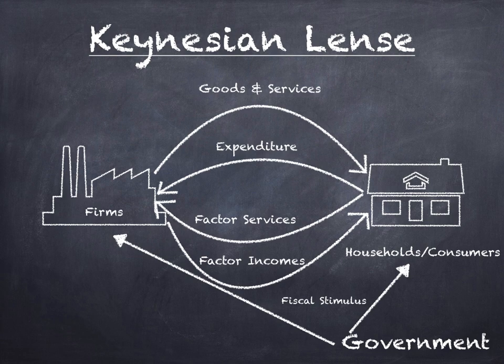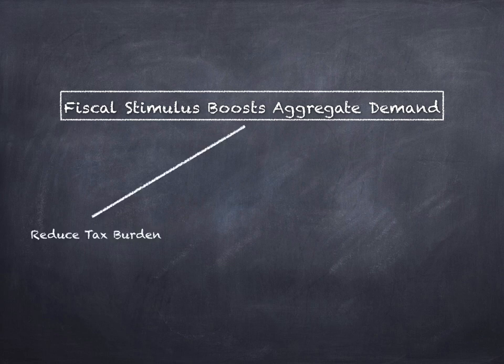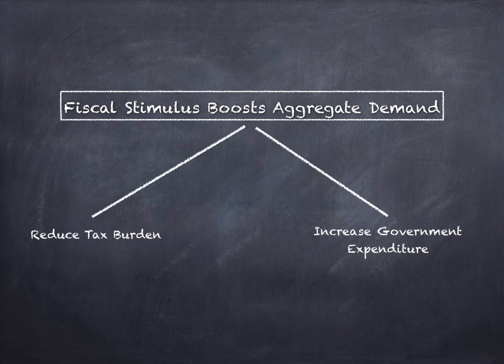Fiscal stimulus boosts aggregate demand. Government either reduces the tax burden on consumers or increases its expenditure on firms. Through its fiscal stimulus package, government reduces taxes and increases expenditure, thereby pumping money into the economy. Due to the current lockdown, the Indian economy is going through a severe downturn, and that is why people are demanding that the government should provide a fiscal stimulus.